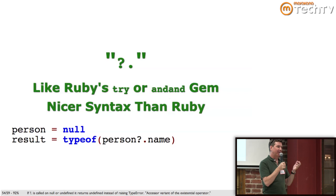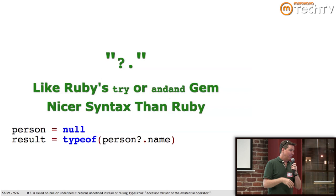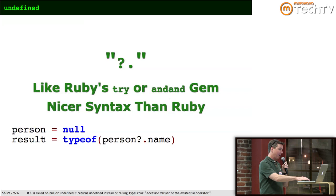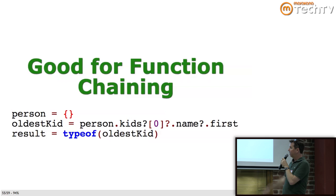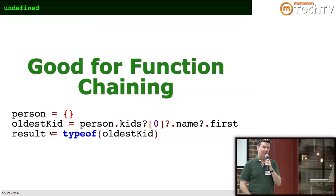The one way CoffeeScript is even better than Ruby: question-mark-dot. This is awesome. It's like Ruby's try syntax or the andand gem, but much nicer — much better syntax than try. If you do question-mark-dot on null or undefined, it doesn't raise a TypeError; it just returns undefined. So if I execute person?.name, it returns undefined instead of raising an error. And on the next slide, this is why it's so great for function chaining. An example: oldest_kid equals person.kids?[0]?.name?.first — that won't raise an exception, it'll just return undefined.